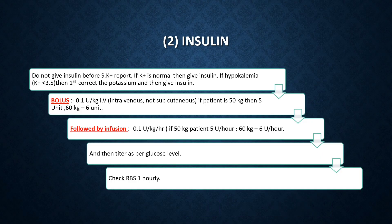The next step is insulin for DKA. Importantly, do not give insulin before the serum potassium report. If potassium is normal, we can give insulin. But if there is hypokalemia — serum potassium less than 3.5 — first correct the potassium, then give insulin, because insulin infusion can lead to hypokalemia and the patient can go into arrhythmia or cardiac arrest.